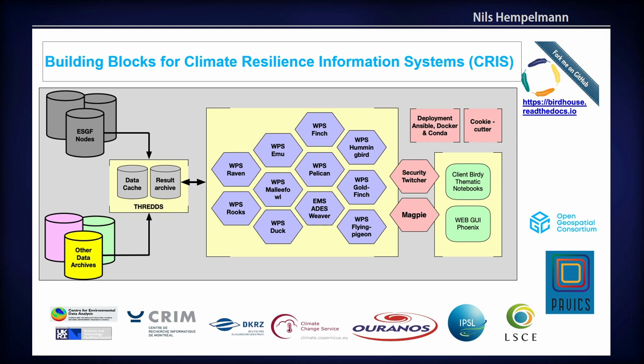In terms of climate-related building blocks, we are not starting from scratch — there is quite a lot already out there. What I'm showing here is all open source and can be found in a GitHub organization called Birdhouse. Left and right there are other things as well: two tools already implemented at ECMWF C3S — rooks, a service for polygon and bounding box subsetting — and deployment mechanisms using Ansible, Docker, and Conda. We are in close collaboration with ECMWF on bringing other blocks into the climate data store.